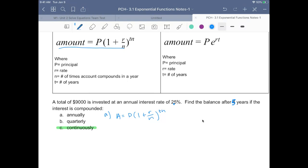So annually, your n is equal to 1. In this case, the $9,000 is equal to the principal. It's how much we start with. The rate is equal to 0.025 as a decimal, and the time is equal to 5 years.